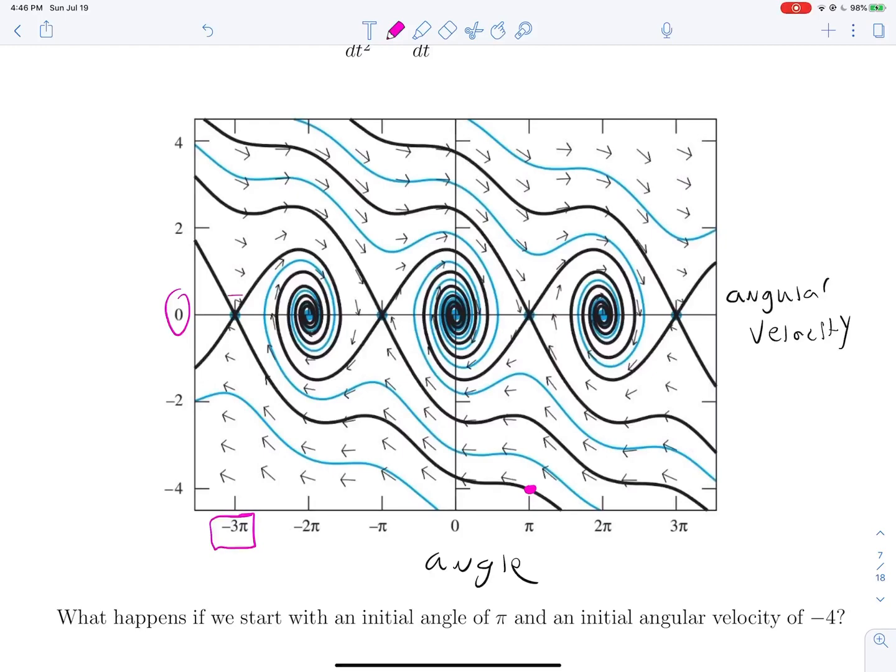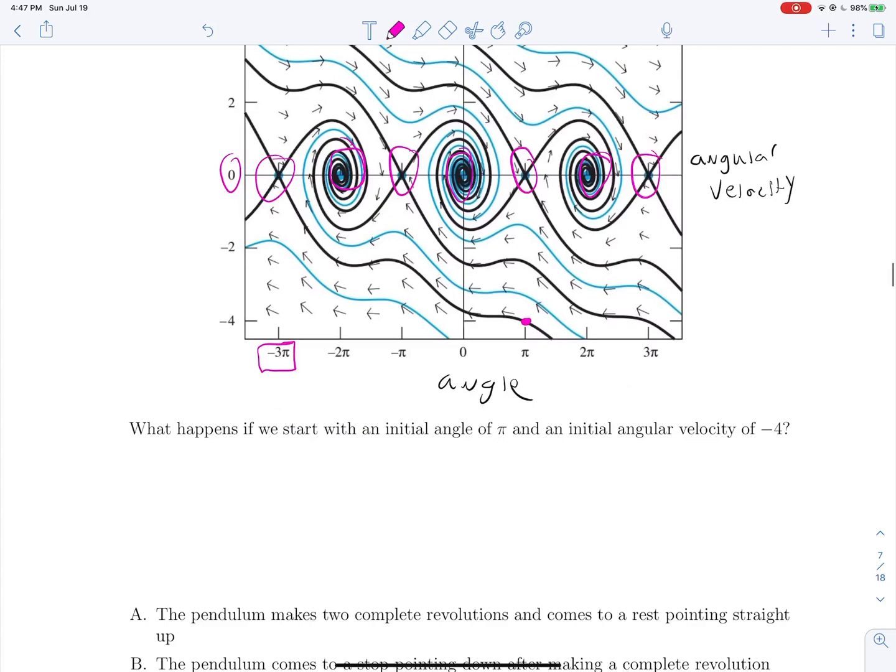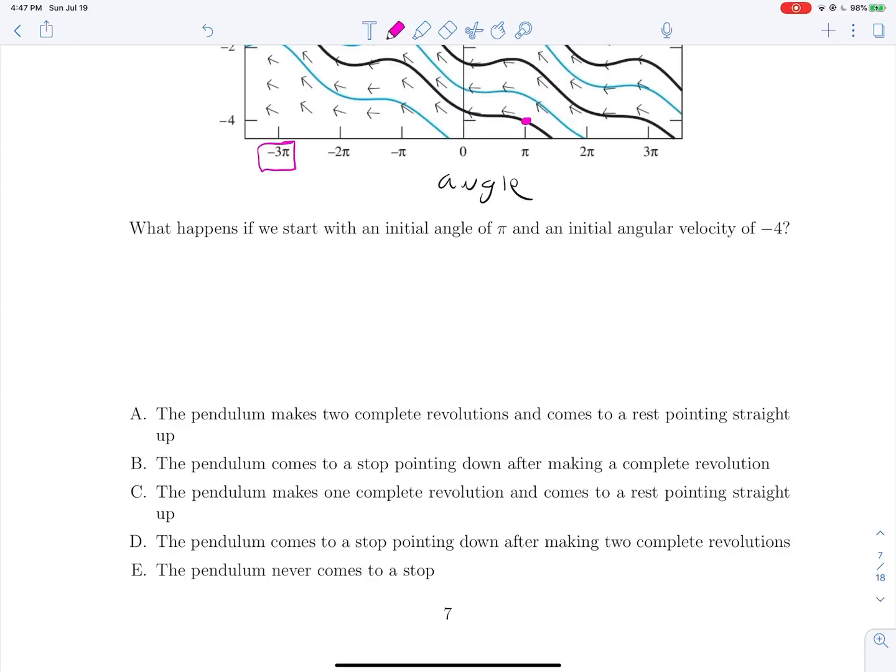And if we just look at what these critical points are, we have saddle points at all of the locations that correspond with the pendulum standing straight up. And then we have spiral sinks at all the multiples of 2π. So that's when the pendulum is going straight down. That makes a lot of sense if we think about the physical system. It's going to be a lot harder to spin the pendulum such that it stands straight up, and that will be kind of an unstable equilibrium point. And likewise, these sink points should be stable because it's a damped pendulum. Most of the time it's going to want to end up down there unless we get one of these very specific situations where we end up standing straight up. So we said the pendulum makes two complete revolutions and comes to rest pointing straight up. It's a little weird, but that is what we get.